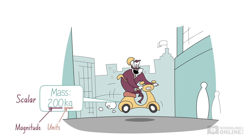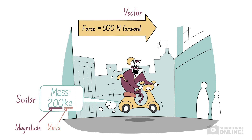On the other hand, a vector quantity has a magnitude, units of measurement, and a direction. The same scooter could easily provide 500 newtons of force forward, where 500 is the magnitude, newtons is the unit, and forward is the direction.